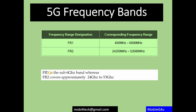The protocol stack has two planes: control plane (for signaling — RRC and NAS messages) and user plane (for data). For the control plane, the stack at the UE side includes physical, MAC, RLC, PDCP, RRC, and NAS layers. At the gNB, the stack is the same up to RRC, but NAS is present at the AMF — similar to how MME held NAS in LTE.